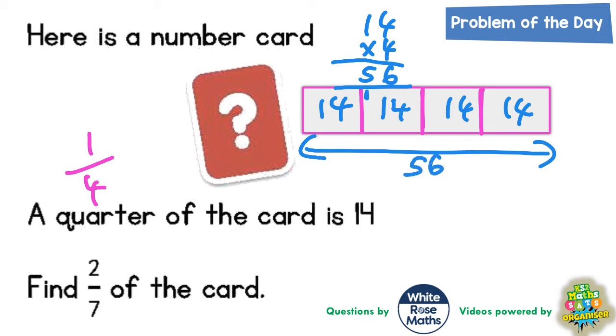So the whole bar must be worth 56. Which means the number on the card must be worth 56. But what we now need to do is find 2 sevenths of the card. Well we've just said that the card is worth 56. So we're basically finding 2 sevenths of 56.